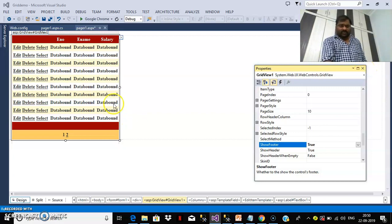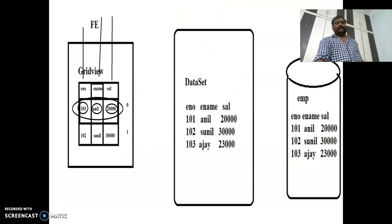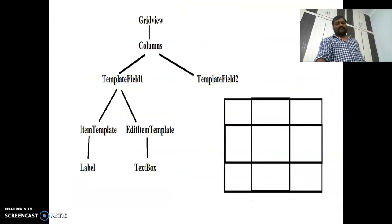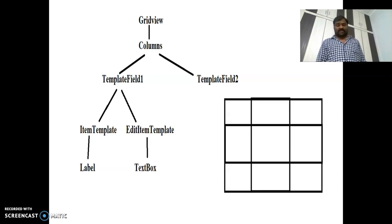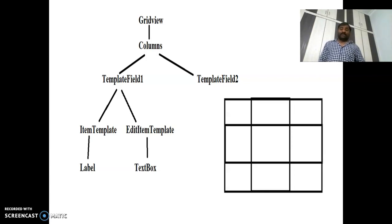I want to edit the templates. The GridView displays data in columns. GridView consists of columns; columns consist of template fields. Template fields consist of ItemTemplate and EditItemTemplate. ItemTemplate consists of a label, and EditItemTemplate consists of a text box. Now if you want to perform insertion operation within the GridView, you need to add one more template called FooterTemplate.